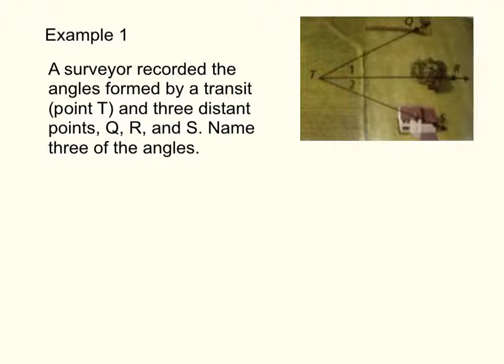Example 1. A surveyor recorded the angles formed by a transit, which is point T, and three distant points, Q, R, and S. Name three of the angles. Point T right here is our transit. So we have three angles. Now, I'm hoping you can see them. We're going to start with the big angle.